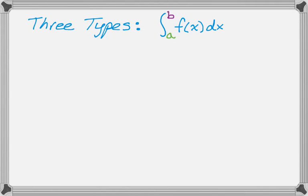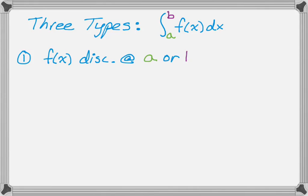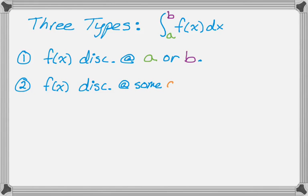There are three ways that an integral can be improper, and a fourth way where you combine everything — and that's a nightmare. The first way is that f of x could be discontinuous at either a or b. A second issue is that f of x could be discontinuous at some value c in between a and b, which would also cause a problem.